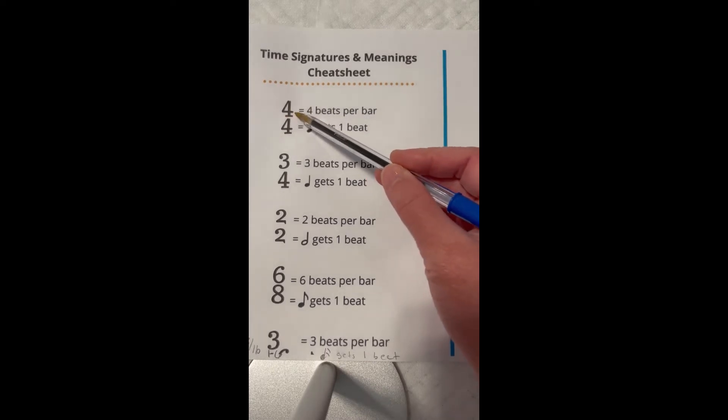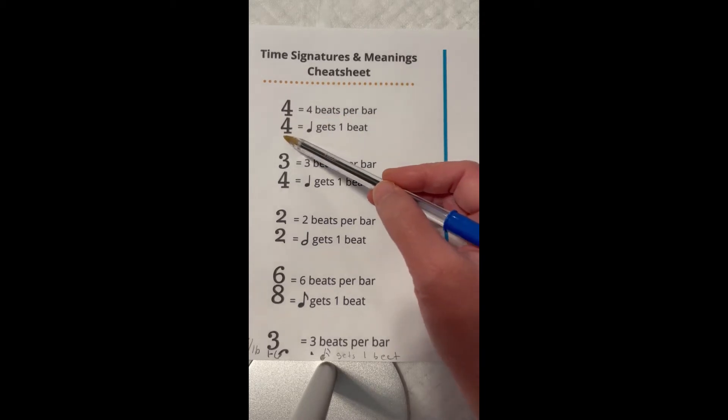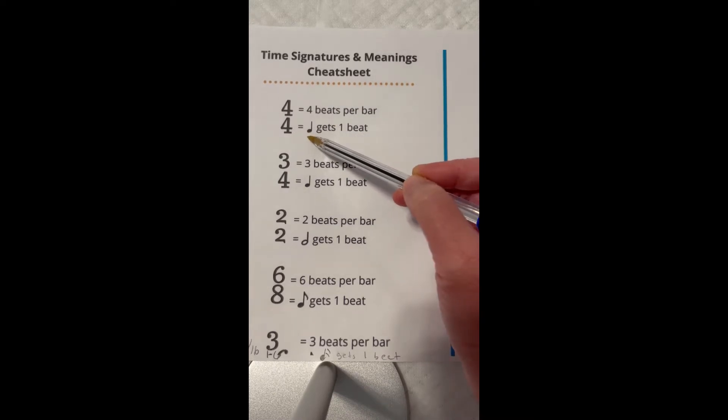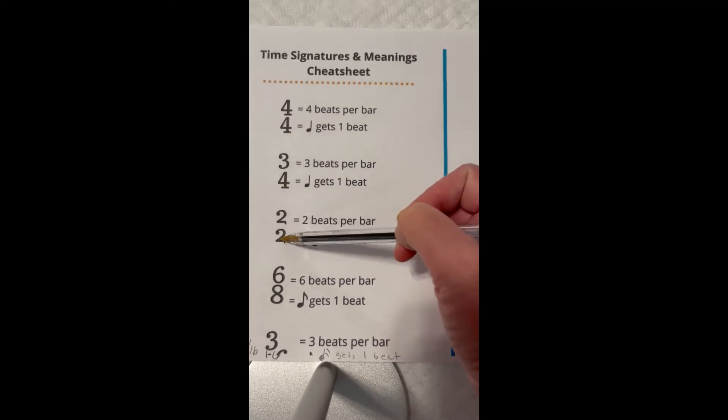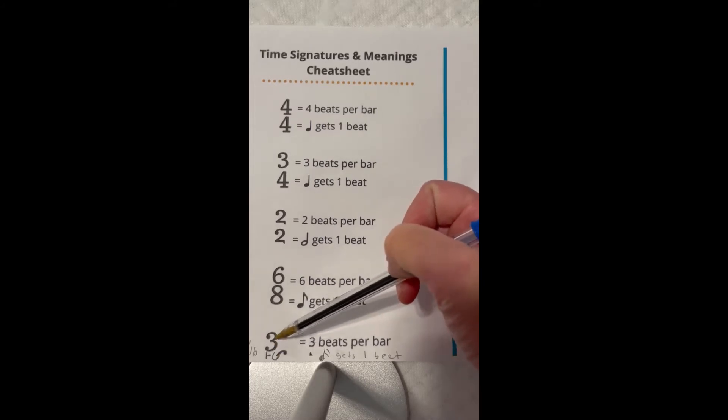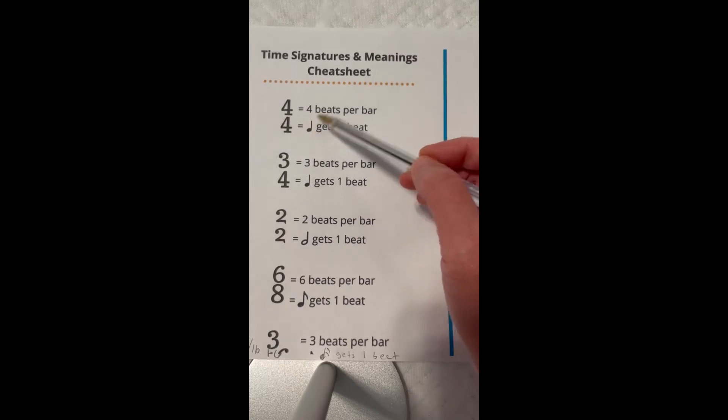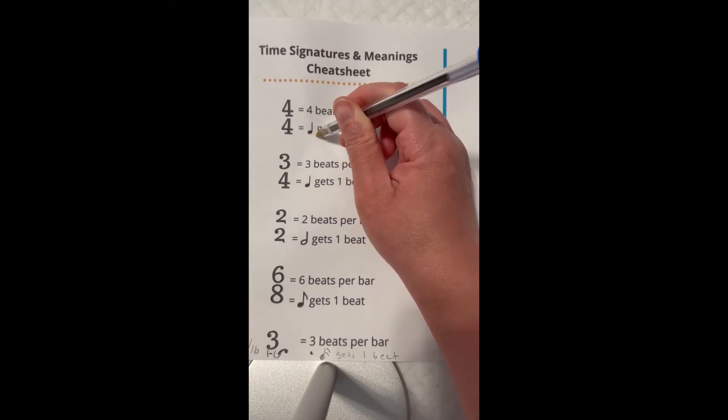The top number: four beats per bar. For the bottom number: one quarter note gets one beat. As you know, a quarter note is one count, so this bottom number is very important. It will always say a four, two, or eight, or sixteen - we'll just stick to these basics right here. So this four symbolizes a quarter note. Remember, a quarter note gets one count.